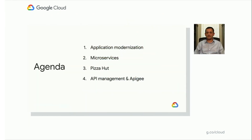This is the agenda for today's session. First, we will see the trends and patterns in application modernization. Moving to a microservices architecture is essential in your modernization journey, and we will discuss what are the key aspects of microservices. Then Chuck will cover the use cases and some of the challenges the team encountered in the modernization effort. Then we'll take a look at what API management and the Apigee platform brings to the table when it comes to modernizing your applications.